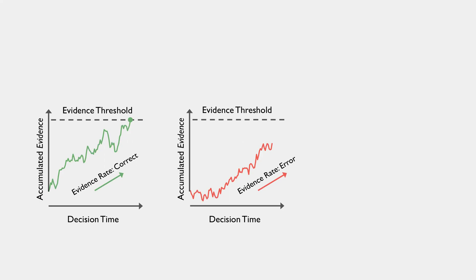A response that someone gives depends on which accumulator collects evidence up to its threshold. This dictates both the response given and the time for that choice. We refer to this collective set of assumptions as evidence accumulation.